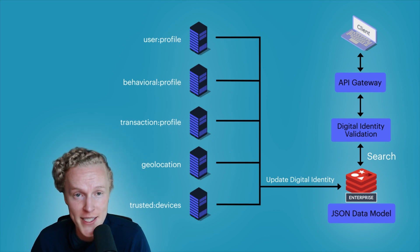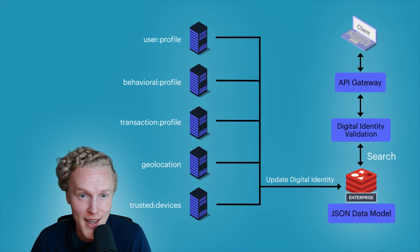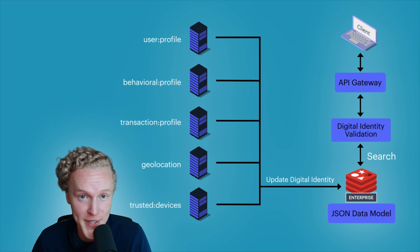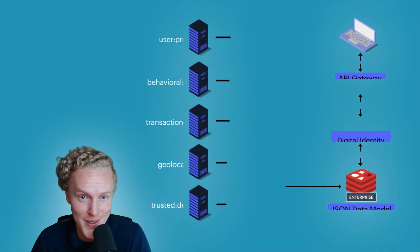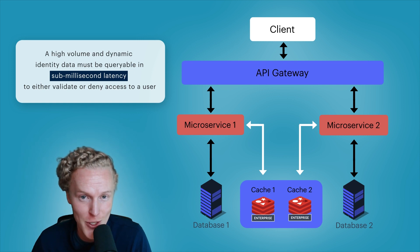RDBMS follow a strict tabular schema, while other NoSQL databases are typically limited to a single model like JSON and can't handle multiple unstructured data types. Redis Enterprise not only has that speed and throughput but supports multiple data types and models to enable real-time identity validation. We use this solution when high volume and dynamic identity data must be queryable in sub-millisecond latency to either validate or deny access to a user.